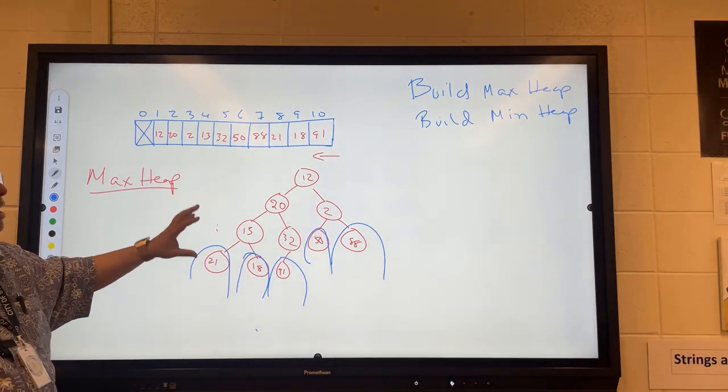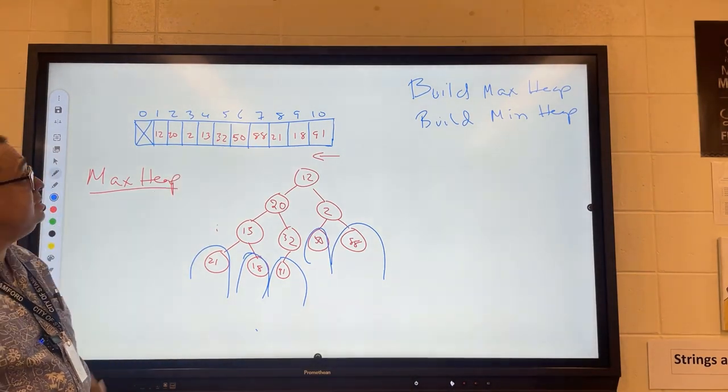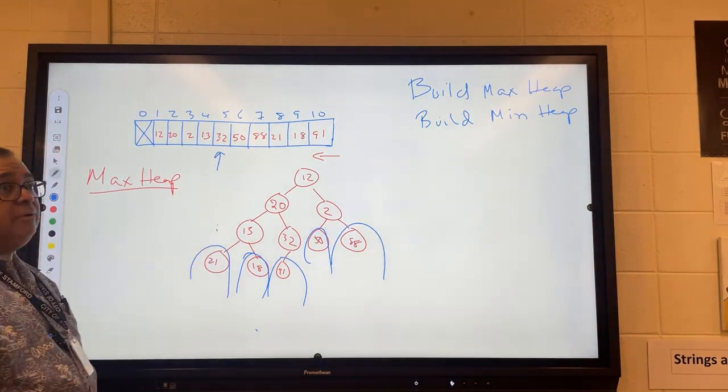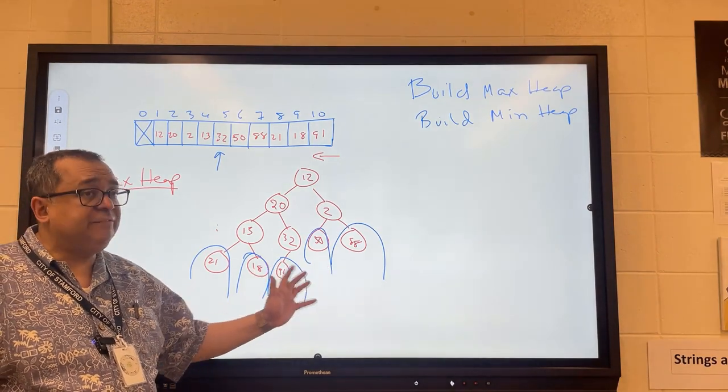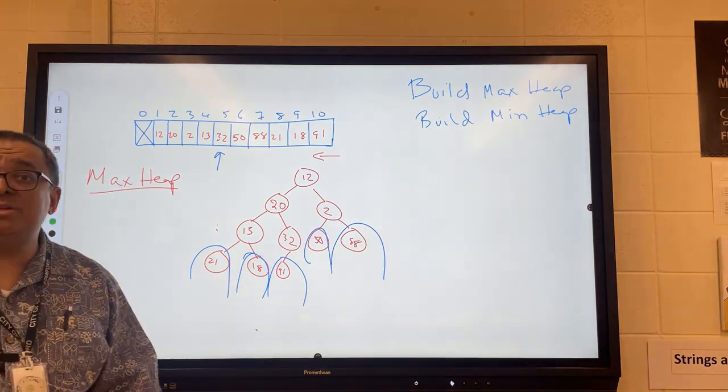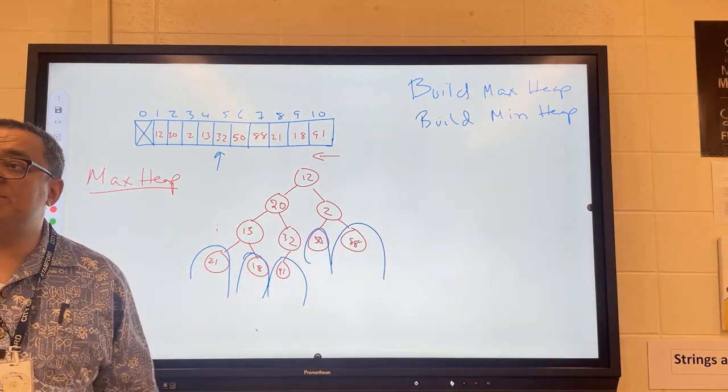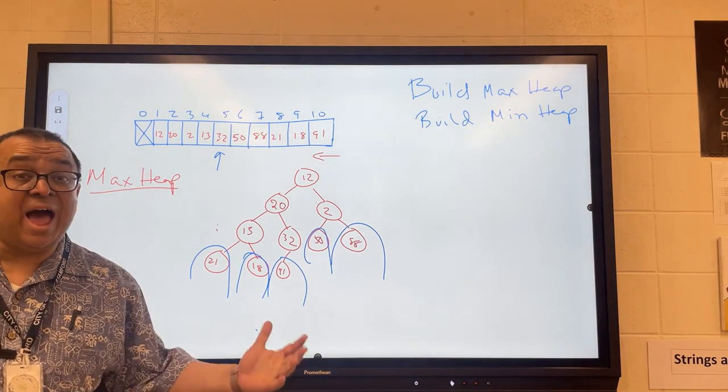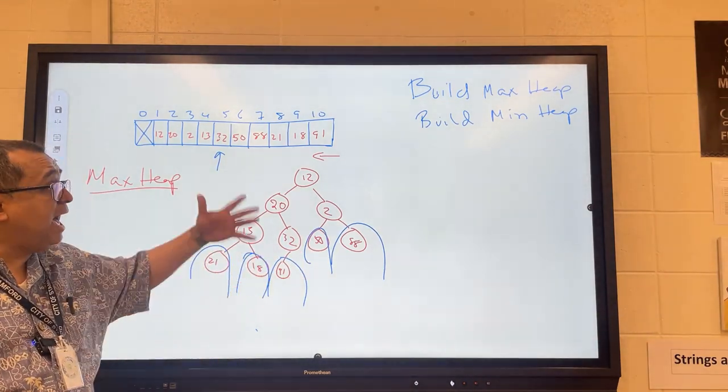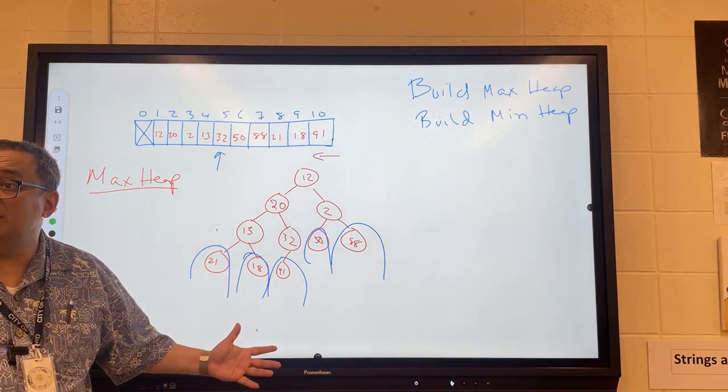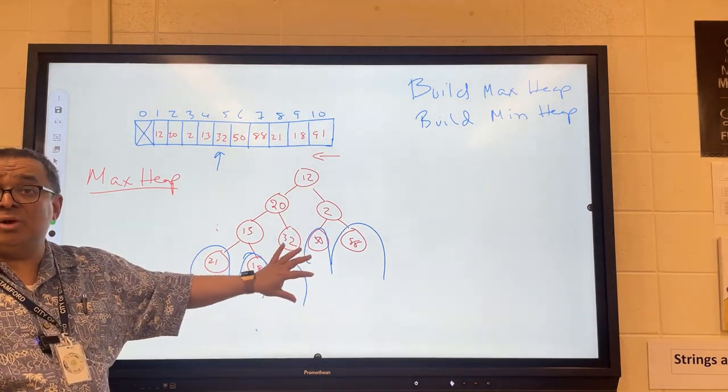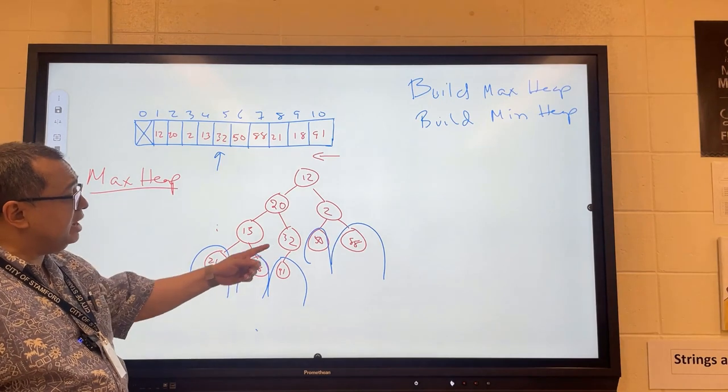So therefore, in this technique, the first node we really need to process is which node? This is the first node we need to process. Now, generally speaking, this last level is not filled out, but in a typical heap, the nodes, the leaves, represent what percent of the total nodes, if the heap's all filled out? About half. So you can see that already, it's a little bit faster than the Williams method because half the nodes don't need processing. Before, every node needed processing in the Williams method. Here, I can at least initially ignore the leaves.